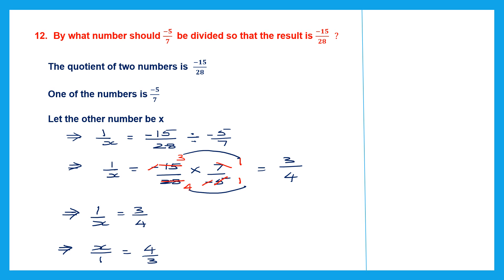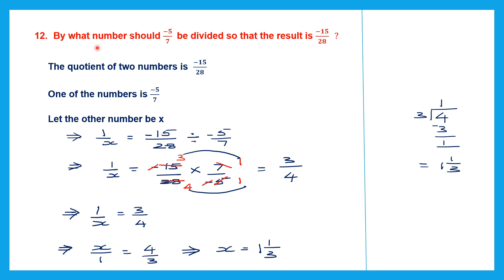To find the value of x we write the reciprocal: x by 1 equals 4 by 3. And 4 by 3 is an improper fraction, so let's make it a mixed number: 3 ones are 3, remainder 1. So we get 1 and 1 by 3. The number that minus 5 by 7 should be divided with is 1 and 1 by 3.